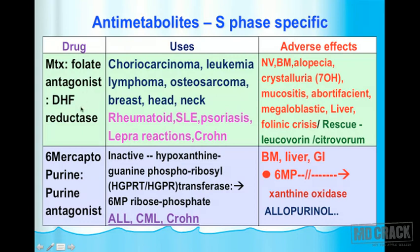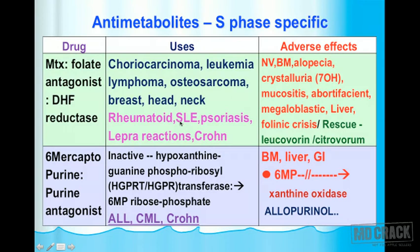Methotrexate is a folate antagonist that inhibits DHFR (dihydrofolate reductase), thereby affecting DNA synthesis. Methotrexate is used for choriocarcinoma, leukemias and lymphomas, osteosarcoma, and a wide variety of tumors including breast, head and neck. It is also an important disease-modifying anti-rheumatic drug (DMARD), used in rheumatoid arthritis, SLE, psoriasis, leprosy reactions, and Crohn's disease.